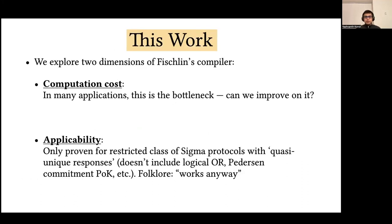In this work, we explore two dimensions of Fischlin's compiler: its computation cost and its applicability. The computation cost ends up being the bottleneck in the number of applications, and so we ask if we can improve on it. In terms of applicability, Fischlin only proved that his compiler applies to a restricted class of Sigma protocols satisfying a notion of quasi-unique responses, and this doesn't include, for example, the OR-composition Sigma protocol or Pedersen's proof of knowledge of a Pedersen commitment. There is a folklore that Fischlin's transform works right away anyway, and it's just a matter of writing down the proof, and we explore this in our work.